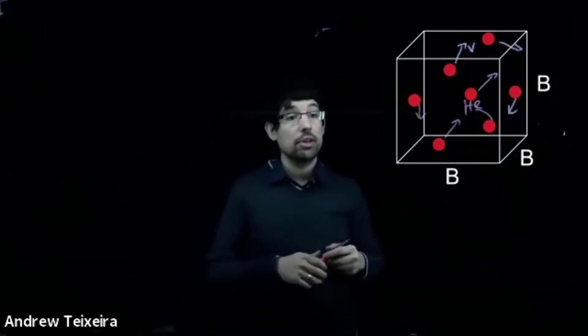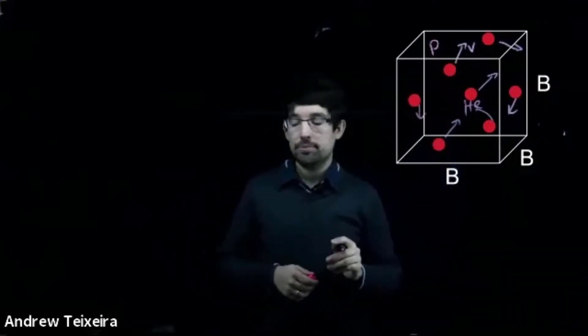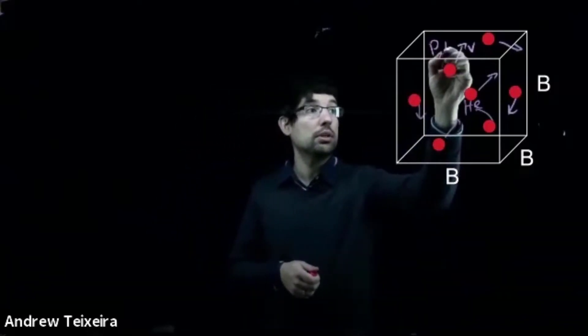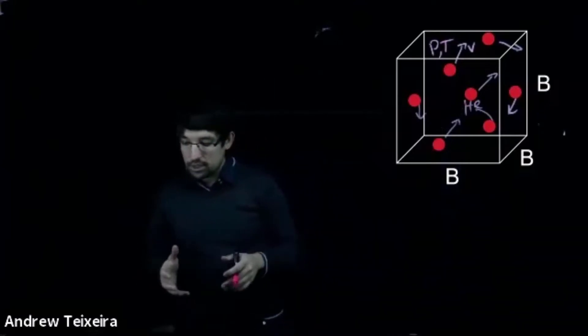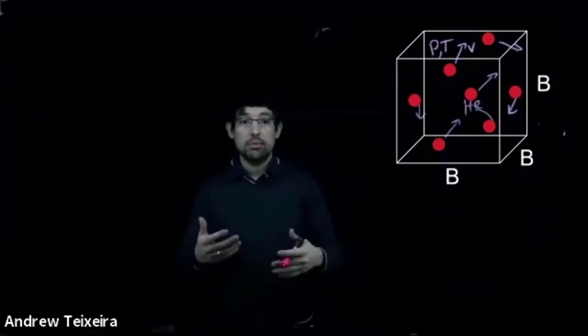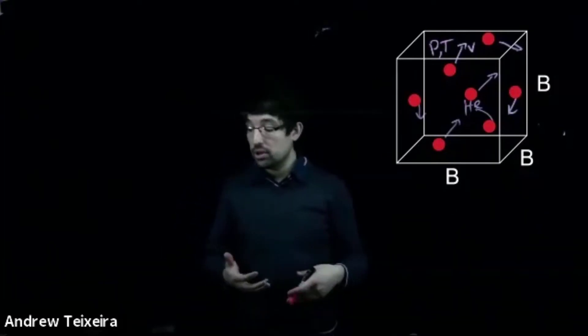We need to know some other information about this. So inside this box, there's a certain pressure, P. So now we've defined a box that has a certain number of moles in it, N, pressure P, temperature T, and those atoms of helium are moving with a certain velocity V.